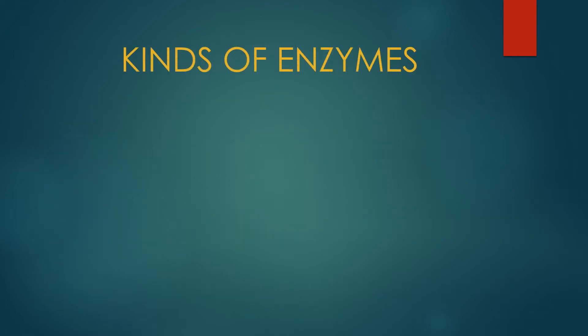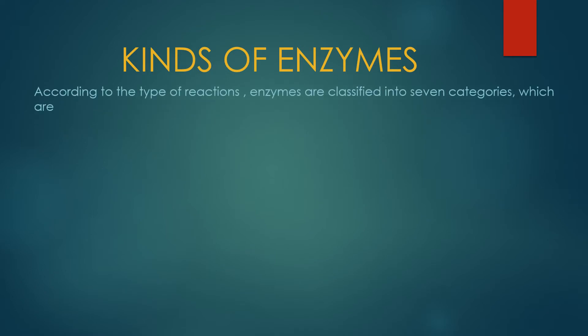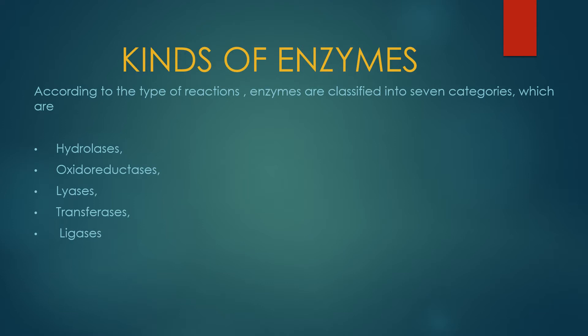Kinds of Enzymes: On the basis of type of reaction an enzyme will catalyze, it is classified into seven categories which are hydrolases, oxidoreductases, lyases, transferases, isomerases and translocases.